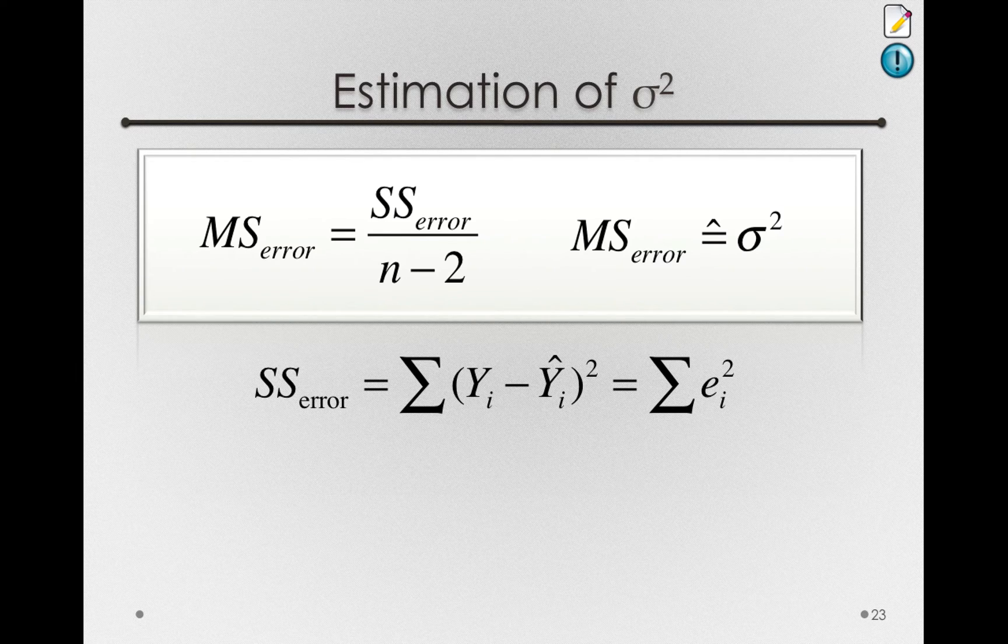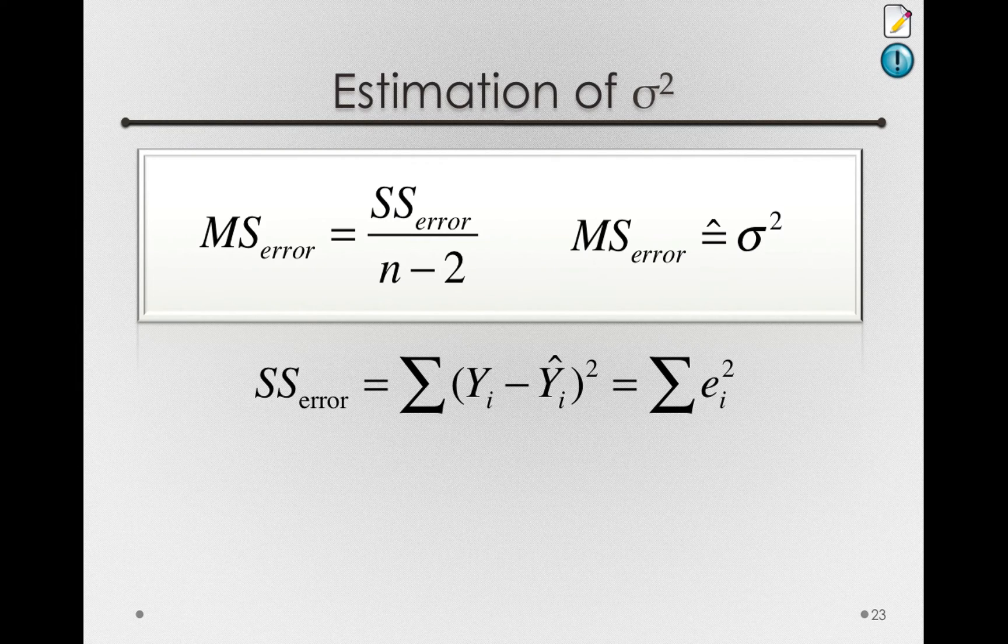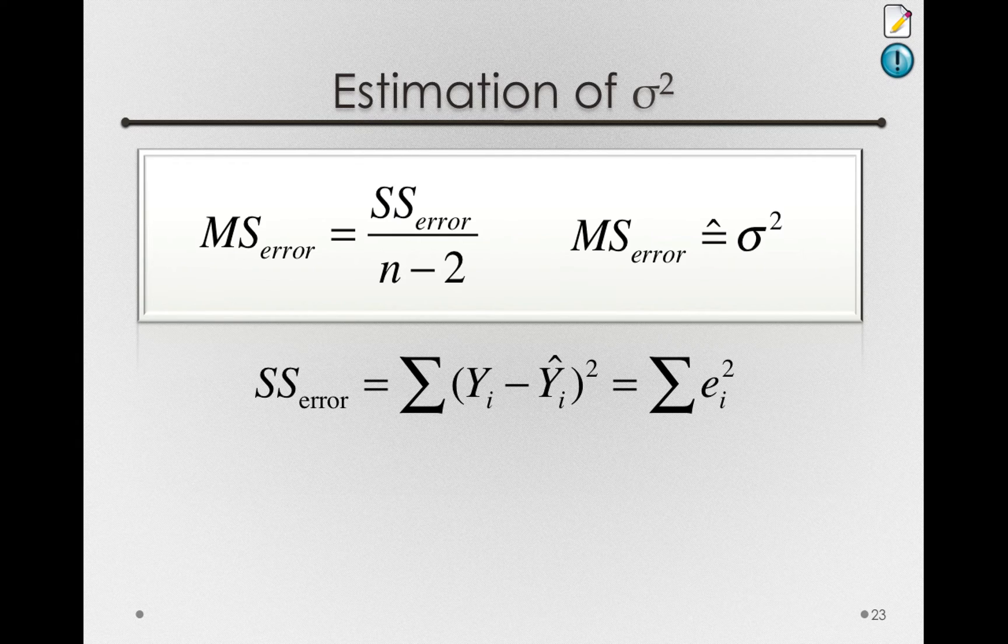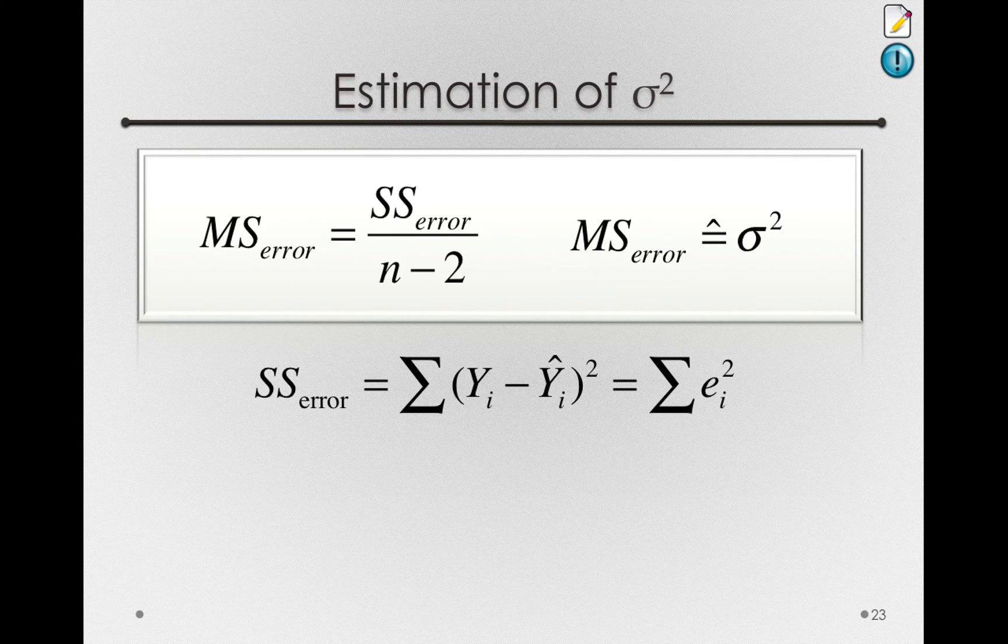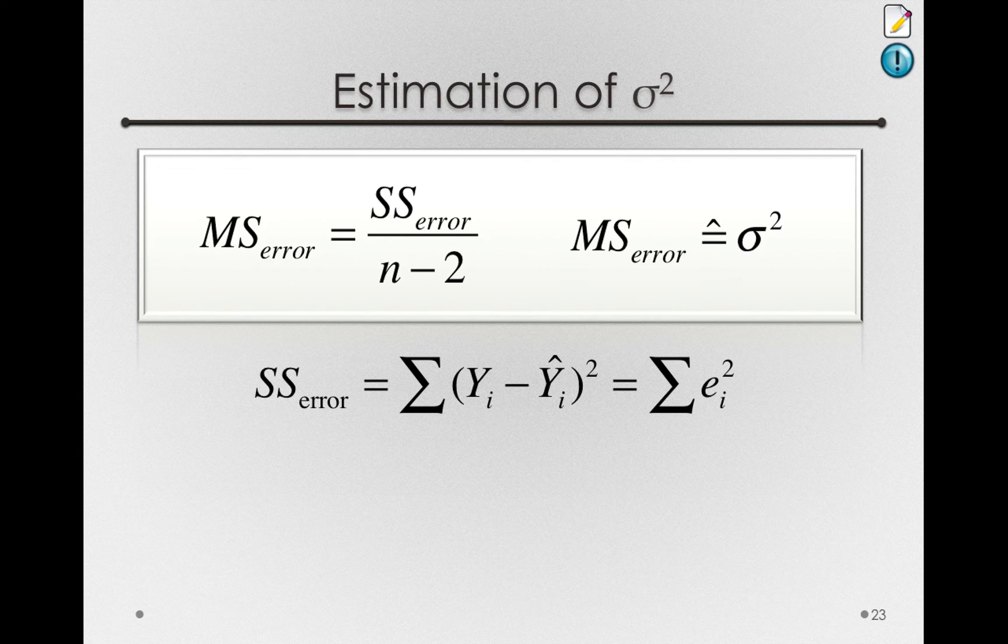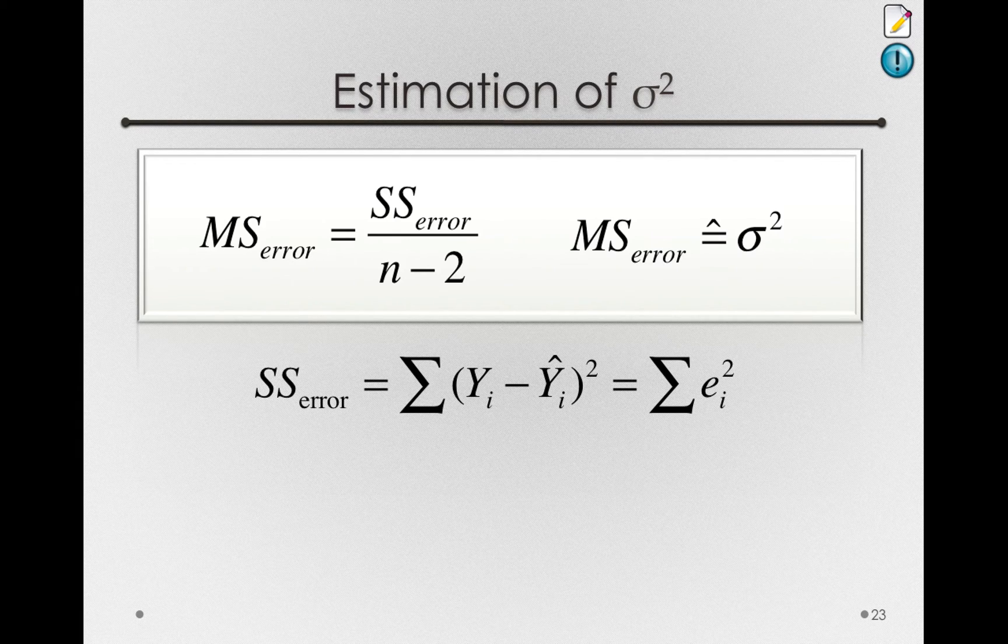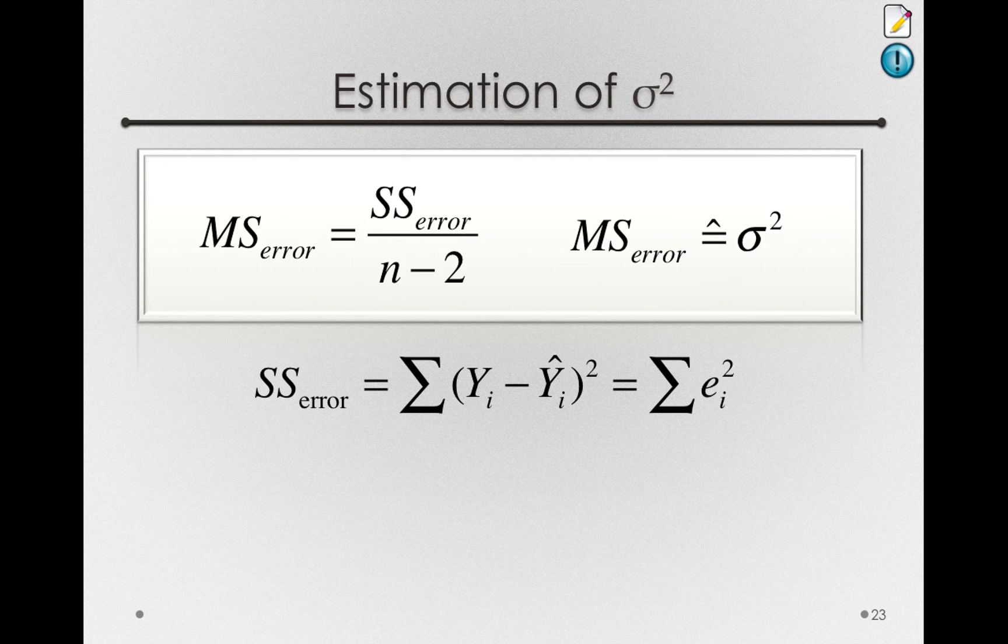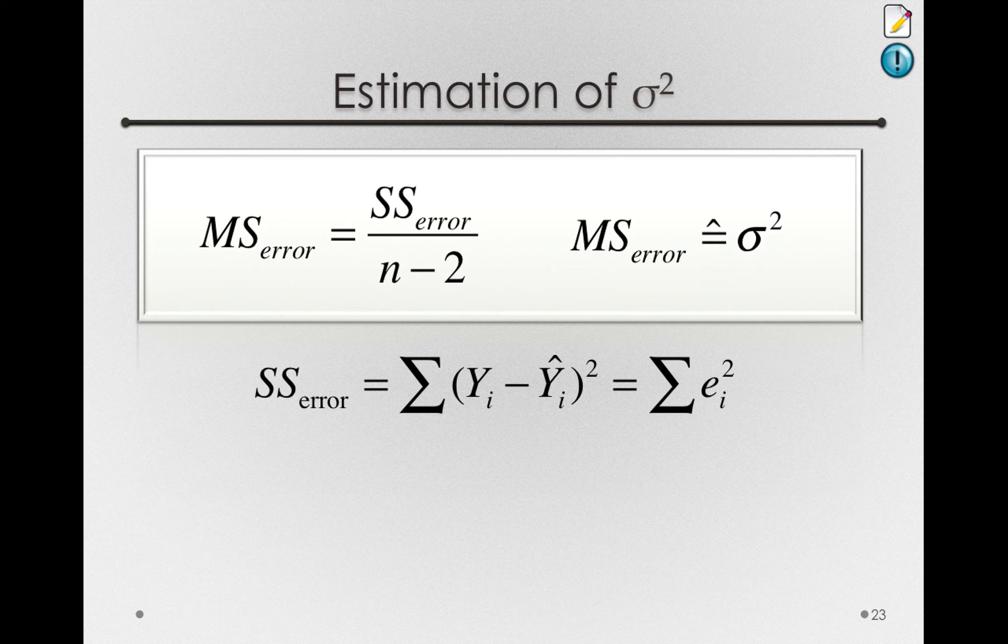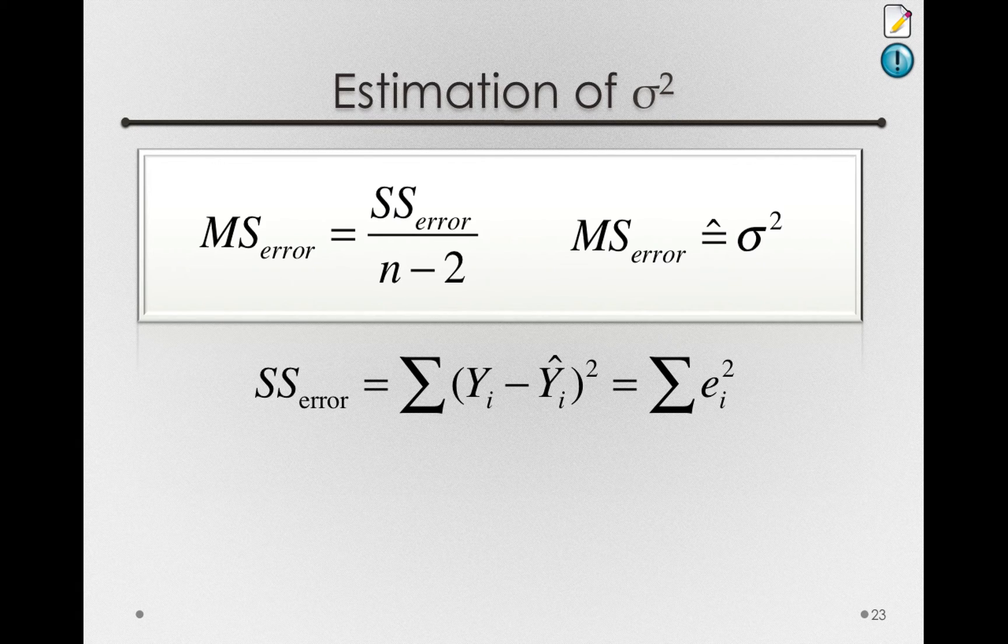The assumption of homoscedasticity simply states that the variance around the line in the population, that is, how much individuals differ from that average for every individual at their level of x, that that variance does not change for different levels of x. We'll come back to testing this assumption later on, but notice why the assumption of homoscedasticity is important. It's important because if the error in the population doesn't depend on the level of x, then every residual in our model could be used equally to form our estimate of sigma square.